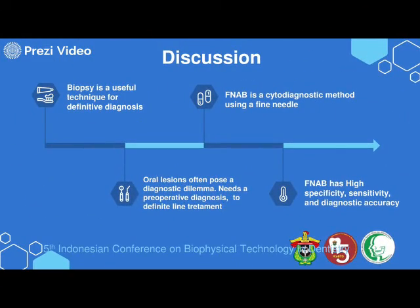Biopsy is a useful technique for definitive diagnosis of abnormal oral conditions — conditions that cannot be diagnosed based on history and clinical findings alone. Additional information from biopsies is required to guide therapy. FNAB is a cytodiagnostic method based on the morphologic findings of individual and small groups of aspirated cells using a fine needle, about 22-gauge and 1.5-inch needle. It is helpful in distinguishing benign and malignant pathology. It is safe, easy to do, inexpensive, accepted by patients, associated with low morbidity, and is a rapid technique.